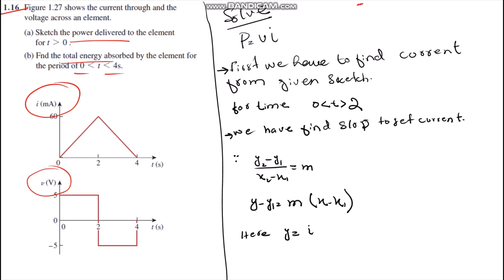First, we have to find power using P equals VI. This is a power question. We have given current and voltage, but the problem is that we have a current which is in the form of a slope.